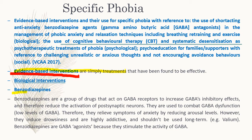The biological intervention is benzodiazepines. Benzodiazepines are a group of drugs that act on GABA receptors to increase GABA's inhibitory effects. They reduce the activation of post-synaptic neurons, effectively slowing down the nervous system. They're used to combat GABA dysfunction caused by low levels of GABA, and they relieve symptoms of anxiety by reducing arousal levels. However, they do induce drowsiness, are highly addictive, and shouldn't be used long term. Importantly, benzodiazepines are only treating the symptoms — not the phobia itself — so they need to be used in conjunction with a psychological treatment.